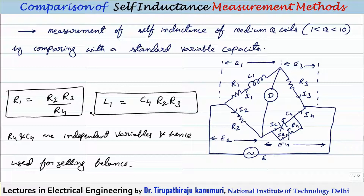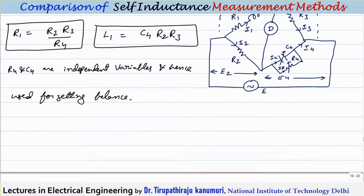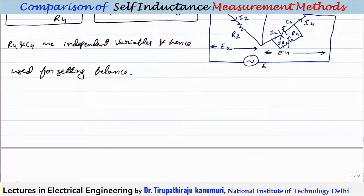In the balance equations, R2R3 is common to both. The differing terms are C4 and R4, which are the independent terms. Therefore C4 and R4 are varied to obtain the balance.